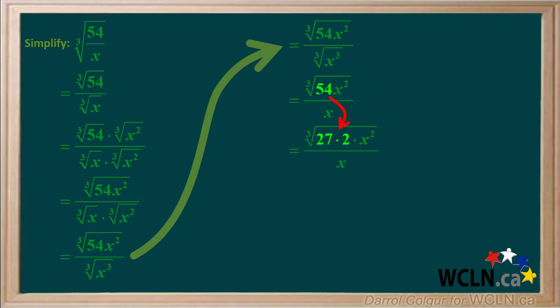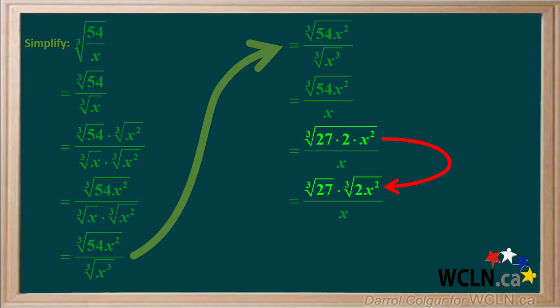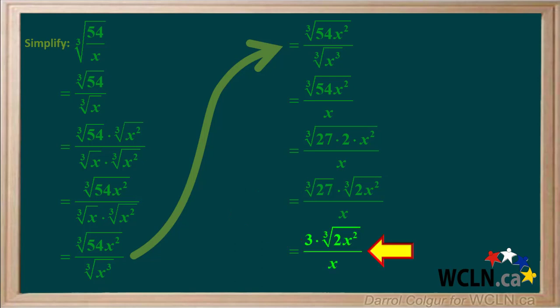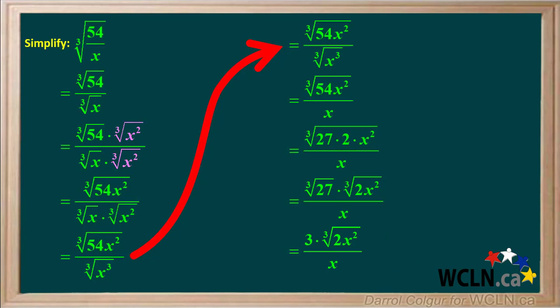54 can be factored as 27 times 2, so we break up the cube root of 27 times 2 times x squared into the cube root of 27 times the cube root of 2x squared. The cube root of 27 is equal to 3, and the final answer is 3 times the cube root of 2x squared over x. Here's the complete solution to this problem. If you like, pause the video and review all the steps yourself.